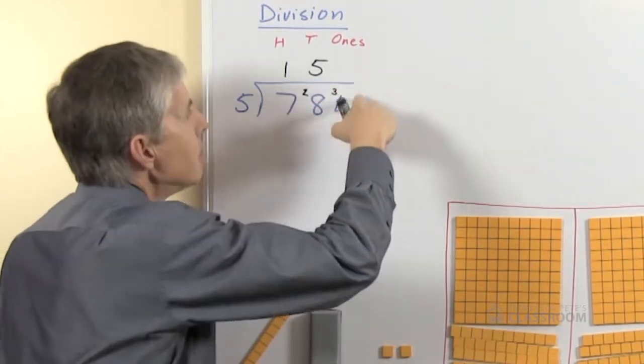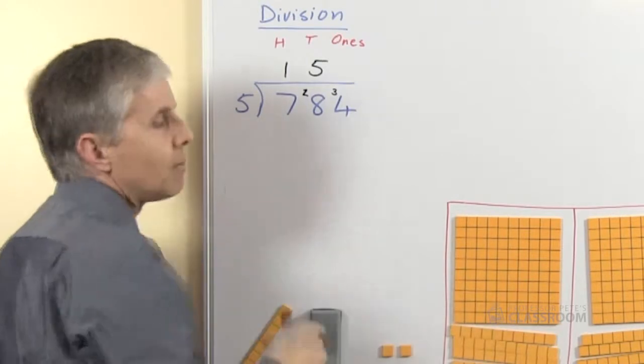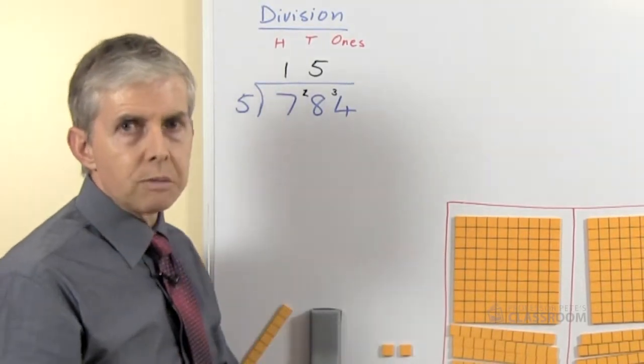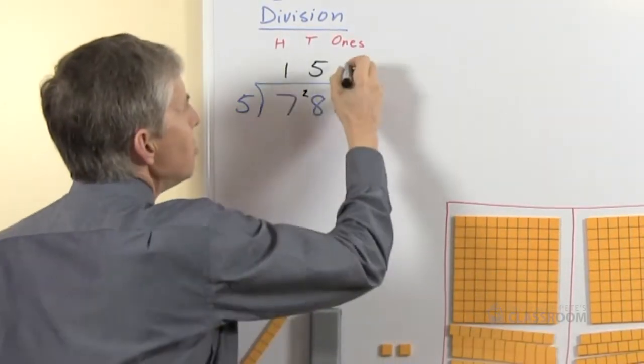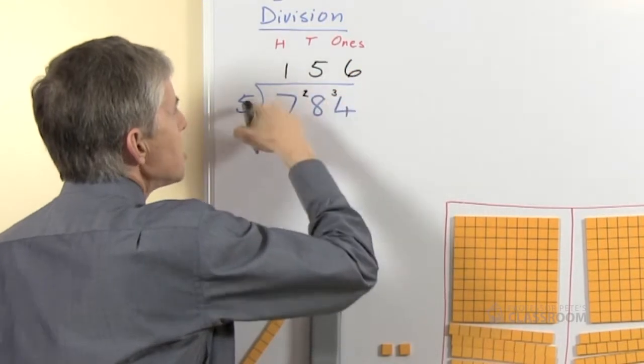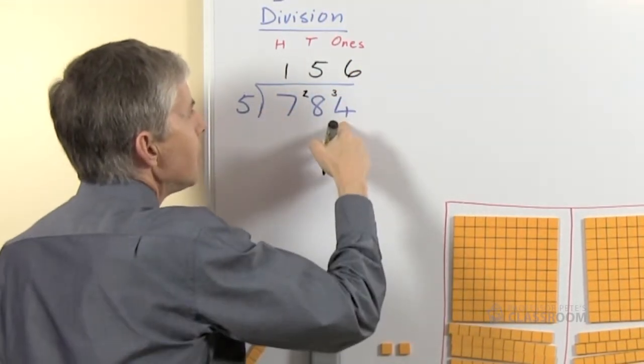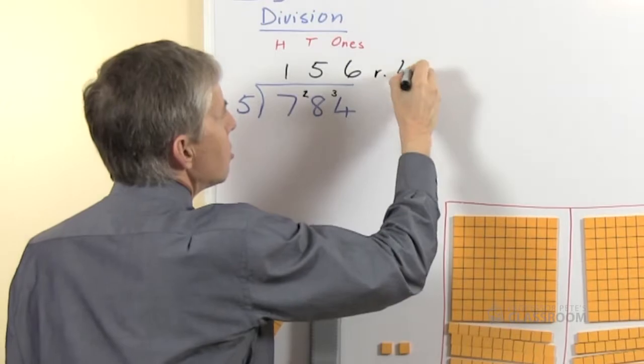Last bit, this is the ones. 34 shared among 5, think of your 5 times table again, the answer will be 6 because 6 fives are 30 and there will be a remainder of 4.